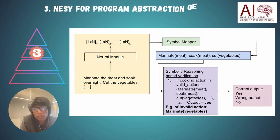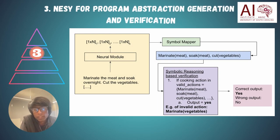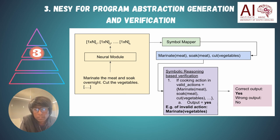Now we move to the third level in the complexity hierarchy: moving from zero-arity functions to single-arity functions. In the zero-arity case, functions did not require arguments. At this level, functions do require specification of arguments. For example, in the cooking domain, when you need to marinate something, you cannot just marinate in general — you need to specify sensible things to marinate.